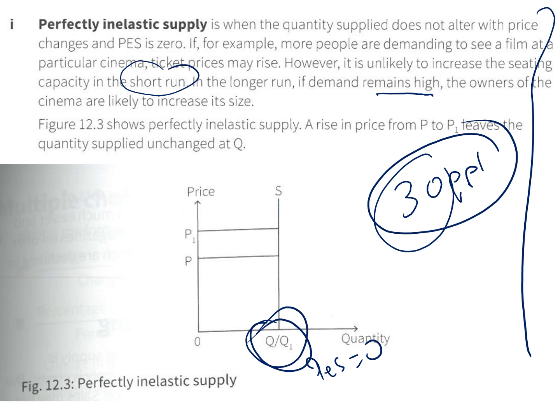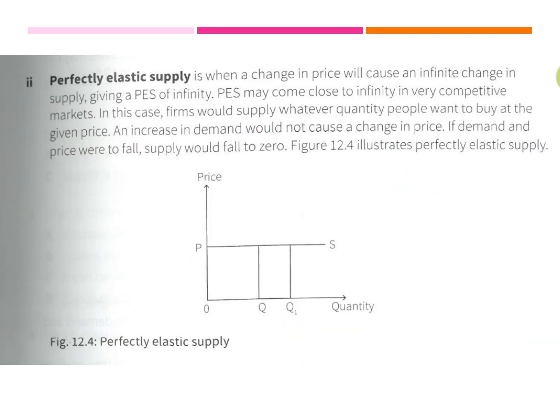For perfectly elastic supply, this is how the curve would look, and if I calculate it, my answer would be equal to infinity. PES may come close to infinity in very competitive markets. In this case, firms would supply whatever quantity people want to buy at the given price. An increase in demand would not cause a change in price. So if demand and price were to fall, supply would fall to zero. This is an example of a perfectly elastic curve.